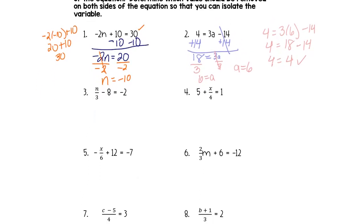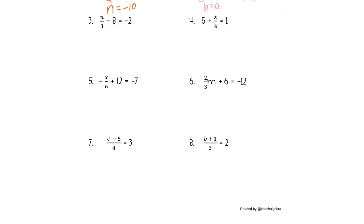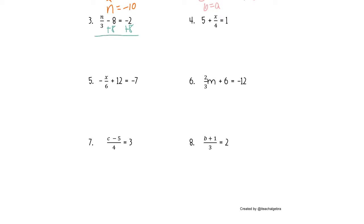Let's move on to another type of equation. We've got n divided by 3 minus 8 equals negative 2. The same idea — I've got a constant here, negative 8, and a constant here, negative 2. The first step to simplifying this is to get the constants together. We also have n divided by 3 on the left, and eventually we're going to need n to be alone. So I'm going to take negative 8 and move it over. The opposite of negative 8 is positive 8, so we add 8 to each side. n over 3 stays exactly how it is, negative 8 plus 8 cancels out, and negative 2 plus 8 is 6.